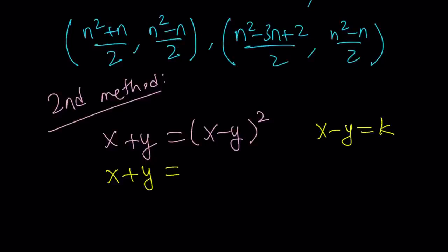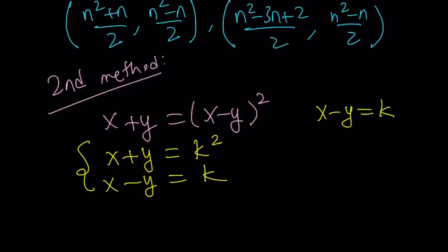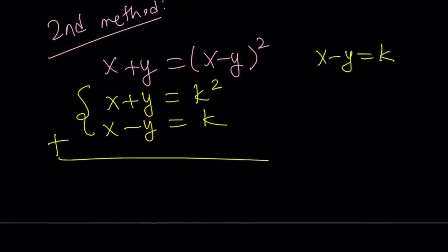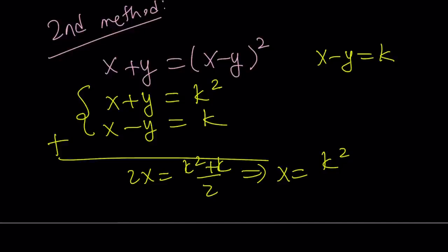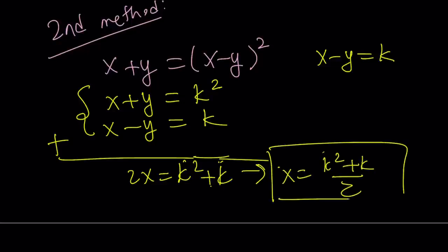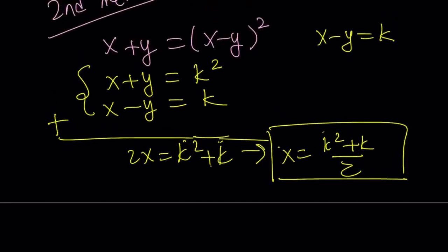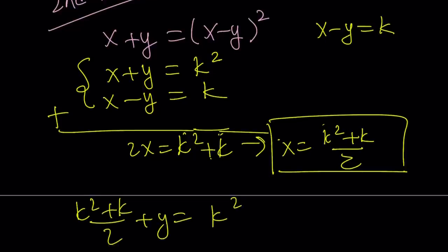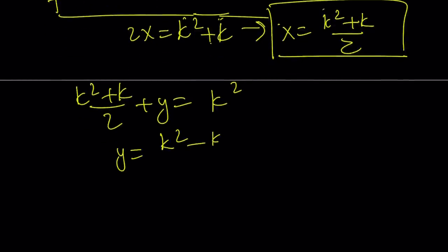Now we get a system of equations that is very easy to solve — no quadratic work needed. Adding the two equations side by side, 2x equals k squared plus k. Dividing both sides by 2 gives x equals k squared plus k over 2. Substituting back into the first equation gives y equals k squared minus k over 2. So the general solution can be written as the ordered pair k squared plus k over 2, k squared minus k over 2.